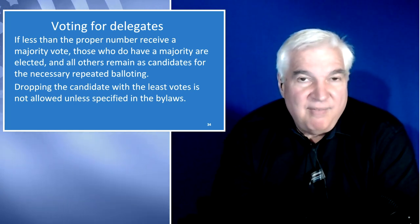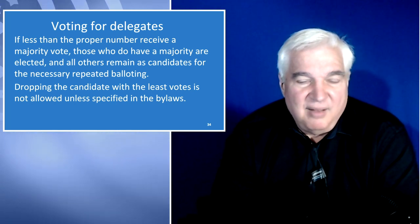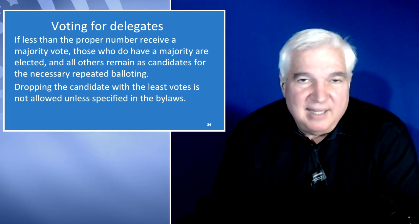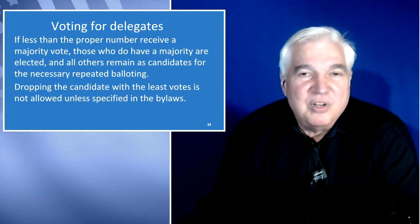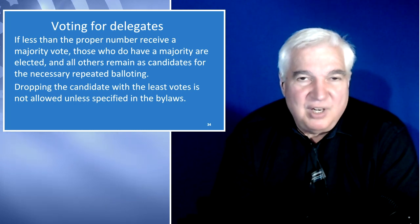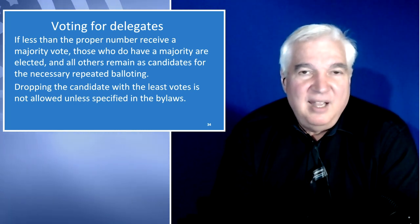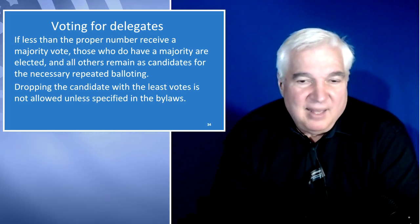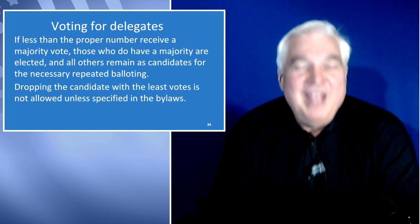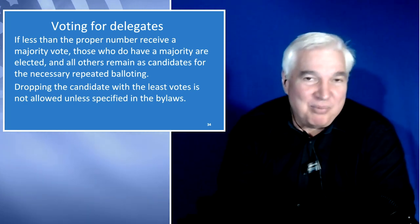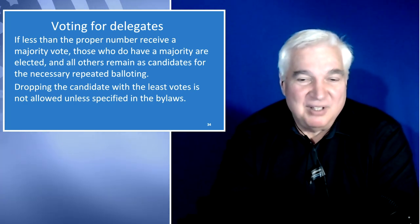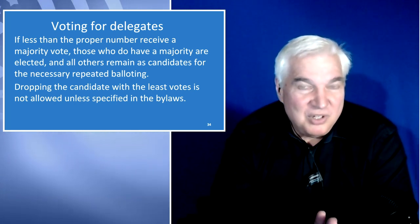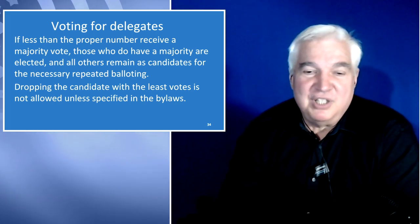If you have diehard vote-splitters and after 10 ballots no one has received a majority to fill all the slots, you have to continue balloting until someone gets a majority. That's a strong argument for having a process for dropping people off in your bylaws or standing rules. Everyone has to agree on the procedure for doing that — it's not rules made up by the nominations committee or the executive committee.